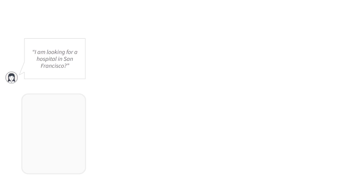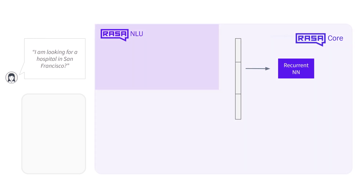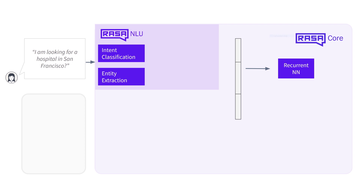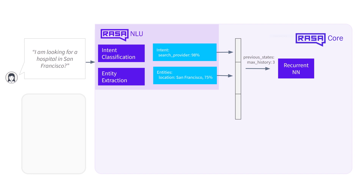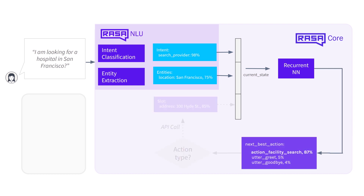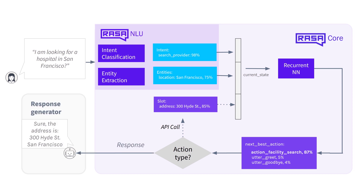Let's take a quick look at the high-level architecture of how the next action is predicted using the Keras policy. When a user asks a question, the NLU model predicts the intent and extracts entities from the input. Those details are used to create a feature vector. First, the model takes in the previous states — the amount of those states is defined by the max history parameter. Then, the feature vector of the current state is fed into the model and the model predicts the next best action. If this action involves backend integrations, like making an API call and extracting additional details, those details can later be featurized and used to make further predictions.